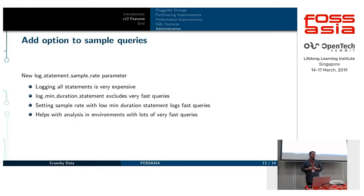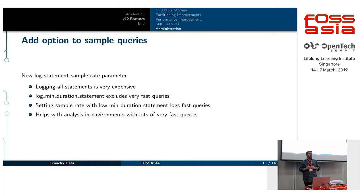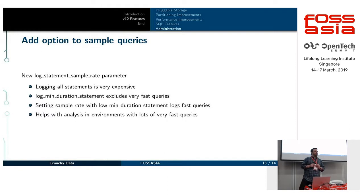You can see on an individual query basis how fast those queries actually were. The sample rate — I believe it's percentage-based — can be tweaked and adjusted based on what you want to do. It's brand new in V12 and I haven't played with it very much myself, but I'm pretty sure it's percentage-based.